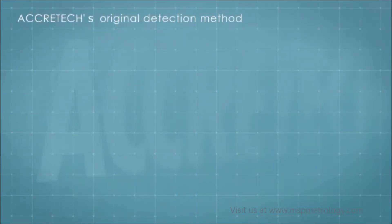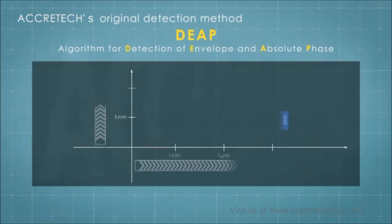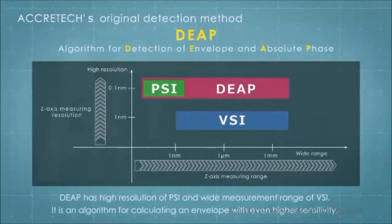Here we would like to show Acrotec's unique white light interference fringe peak detection method called DEEP, which is a special feature of the Optscope. DEEP stands for Algorithm for Detection of Envelope and Absolute Phase.